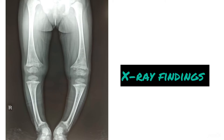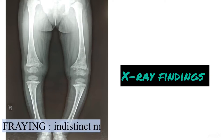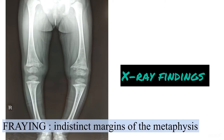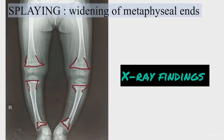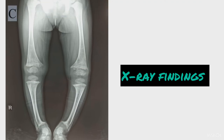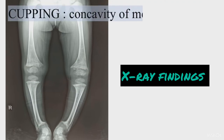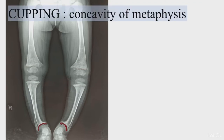The X-ray findings consist of fraying, that is indistinct margin of the metaphysis; splaying, that is widening of the metaphyseal ends; and cupping, seen as the concavity of the metaphysis.